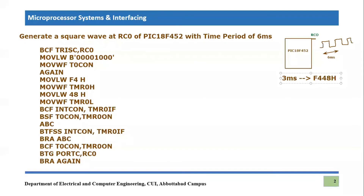Now I have written the code for this specific application. Let's deal with it line by line. The very first line is BCFILE plus C comma RC0, which means we are defining this pin of Port C as an output pin because we have to generate an output square wave. Then we perform the basic steps of programming for Timer Zero — the first step is to load the value of the Timer Zero control register.